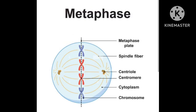Prophase is followed by metaphase. In this process, the chromosomes are arranged at the equatorial plane of the spindle. Each chromosome is attached to the spindle fiber by the kinetochore. By the end of metaphase, centromeres divide to free up the sister chromatids.